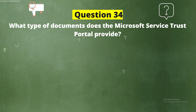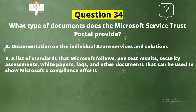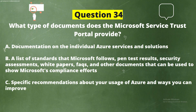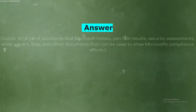Question 34: What type of documents does the Microsoft Service Trust Portal provide? The options are: Option A, documentation on individual Azure services and solutions; Option B, a list of standards that Microsoft follows, pen test results, security assessments, white papers, FAQs, and other documents that can be used to show Microsoft's compliance efforts; Option C, specific recommendations about your use of Azure and ways you can improve; Option D, a tool that helps you manage your compliance to various standards.